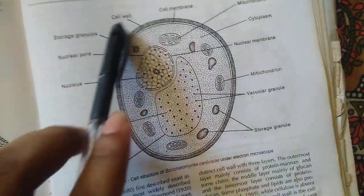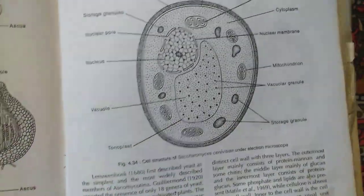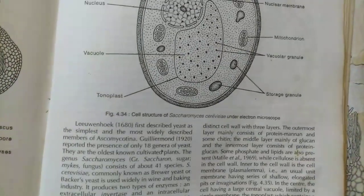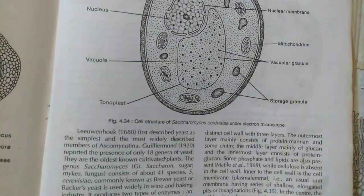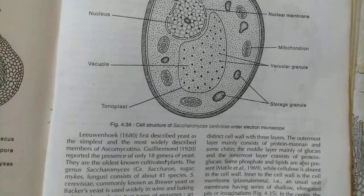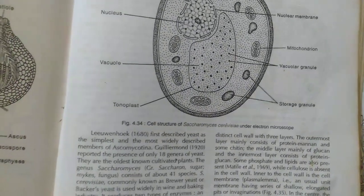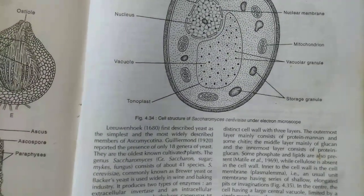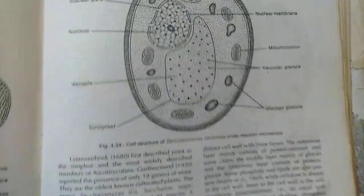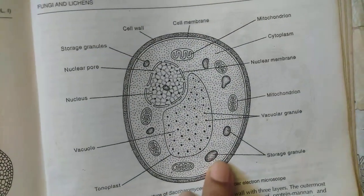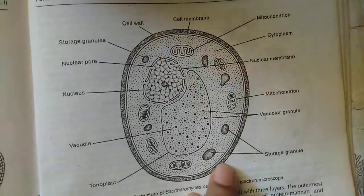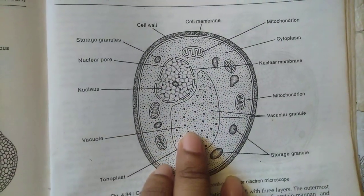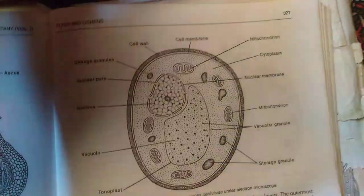Saccharomyces is a unicellular fungi. The vegetative body is unicellular and it is known as baker's yeast or baker's fungi, which is widely used in the wine and baking industry. The vegetative body mainly consists of a cell wall and the inner cytoplasmic material.